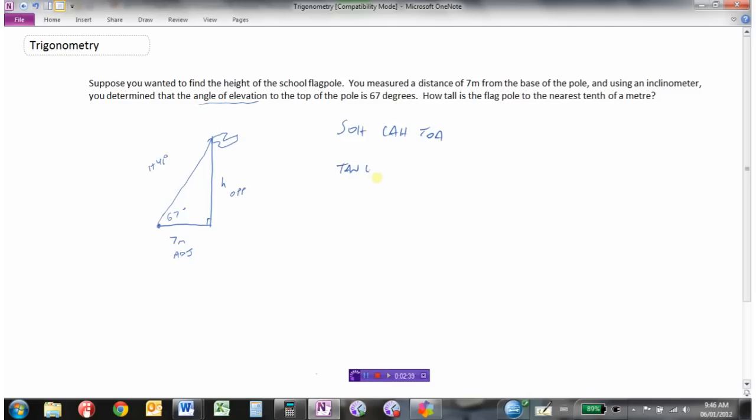So tan of the angle equals opposite over adjacent. The angle we know is 67 degrees, the opposite is h, and the adjacent is 7. So we filled in the two things that we know and we're going to solve for the thing that we don't know.